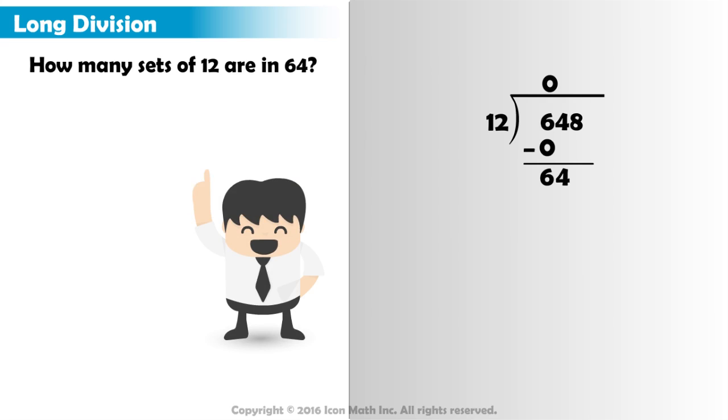We start by making a reasonable guess. Let's guess that there are 4 sets of 12 in 64. Let us calculate. 4 times 12 equals 48. 48 is less than 64, so it may work, but we must be certain that there aren't any more sets of 12.